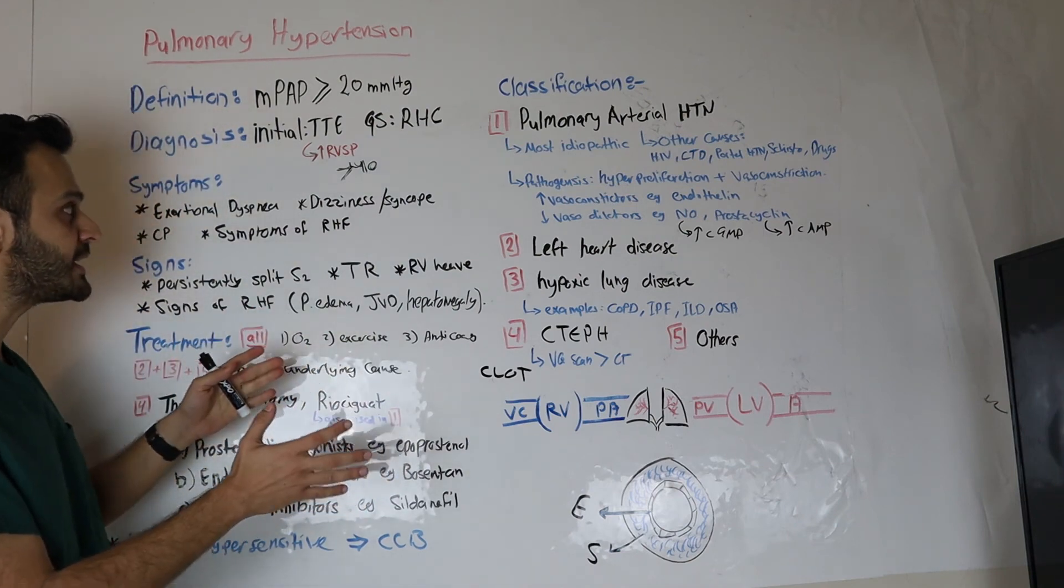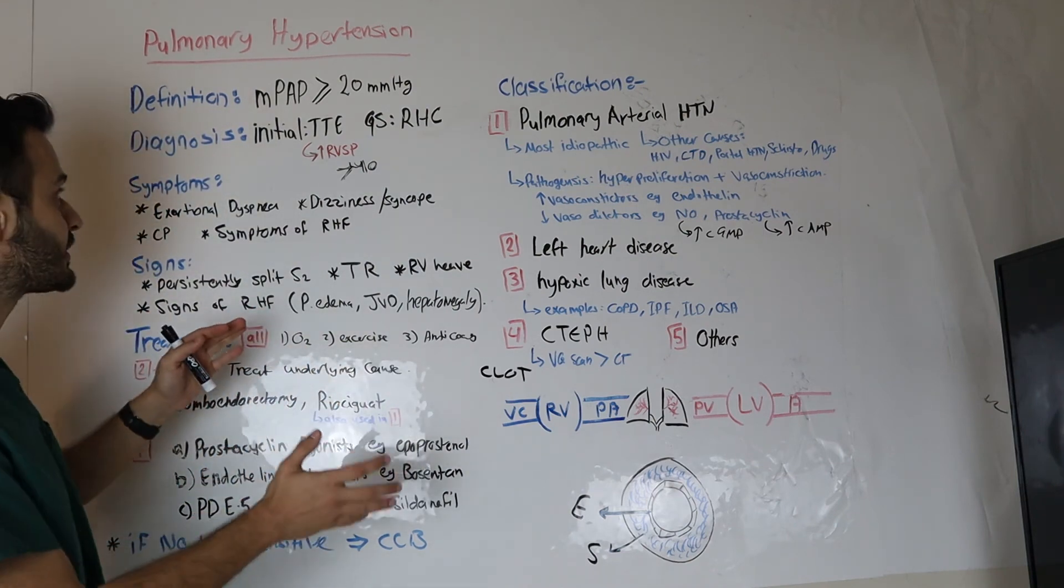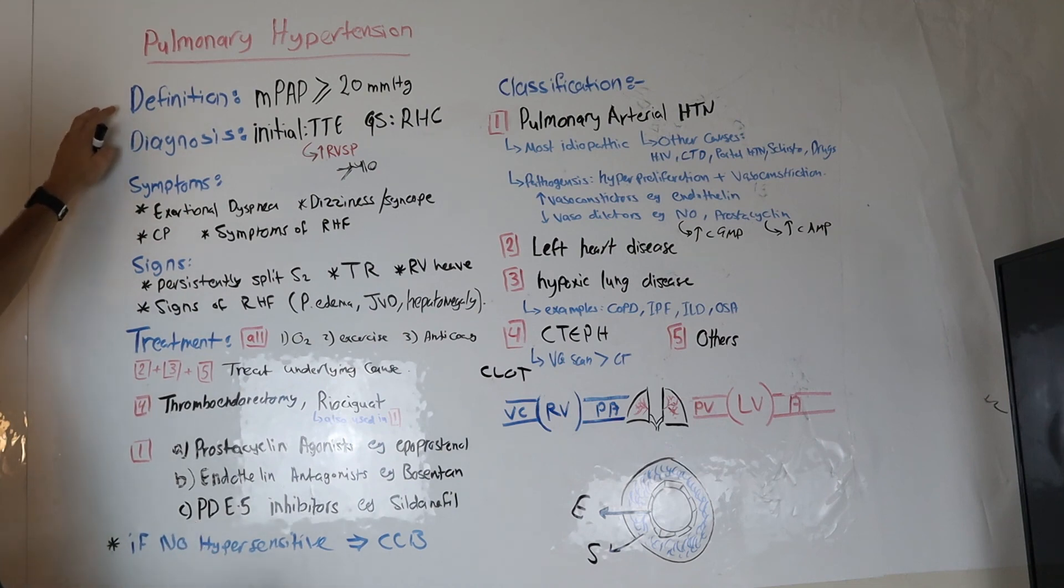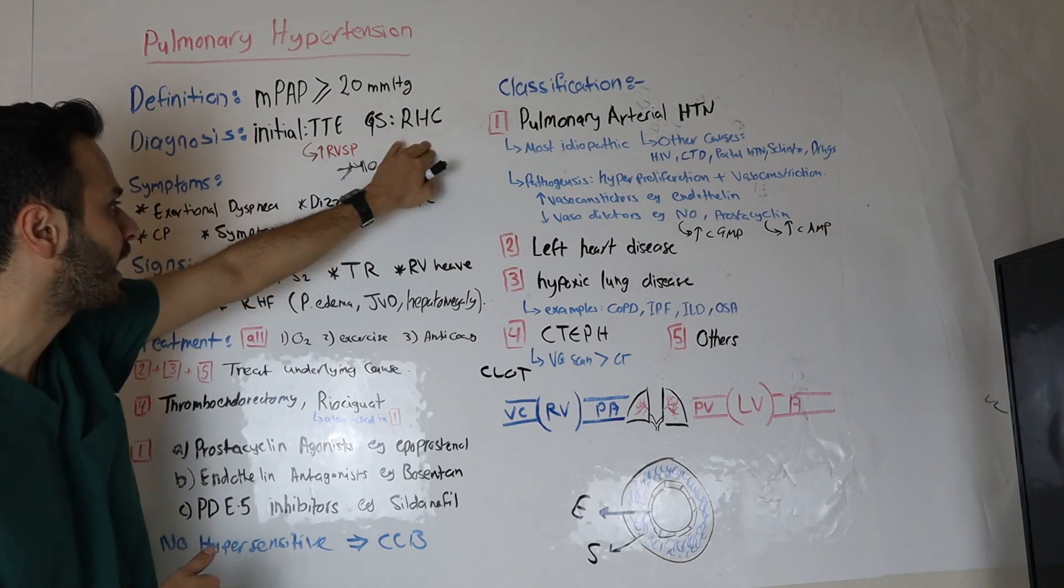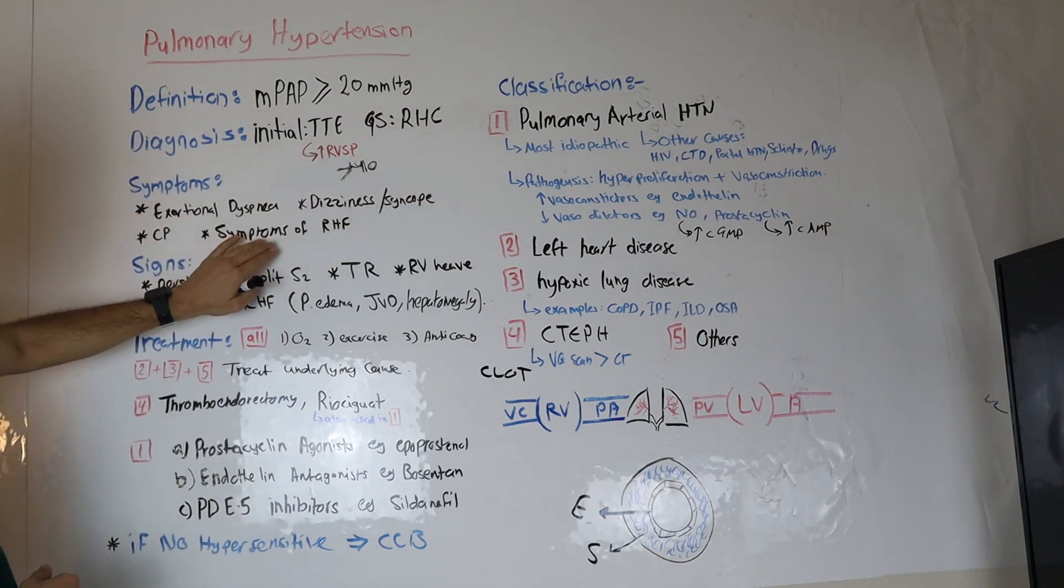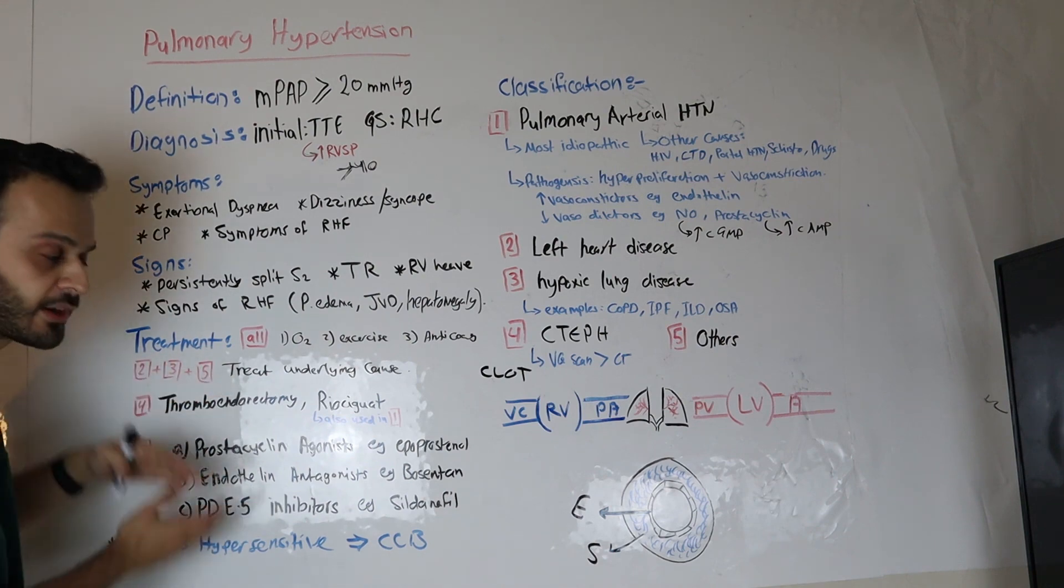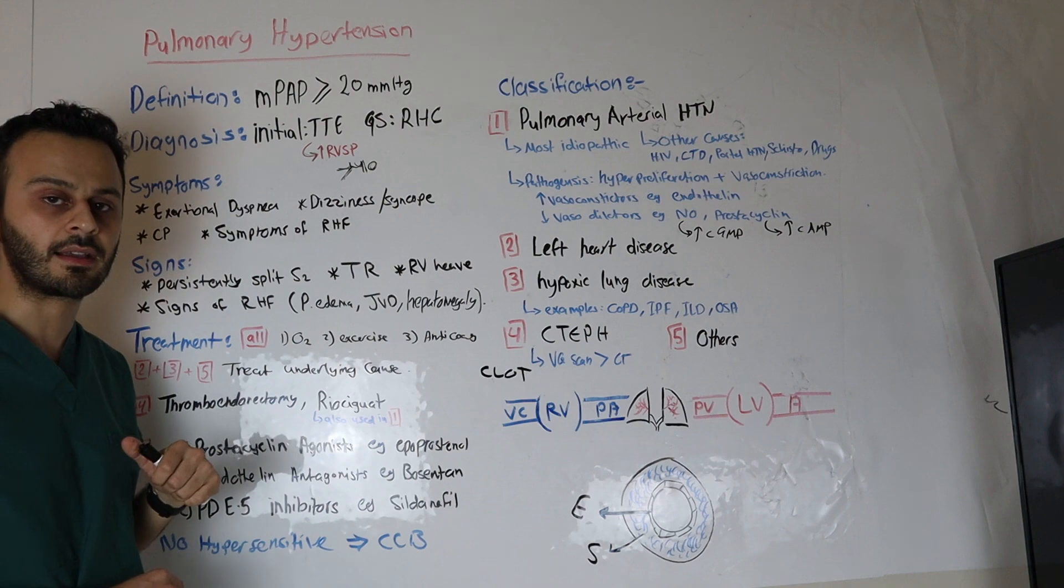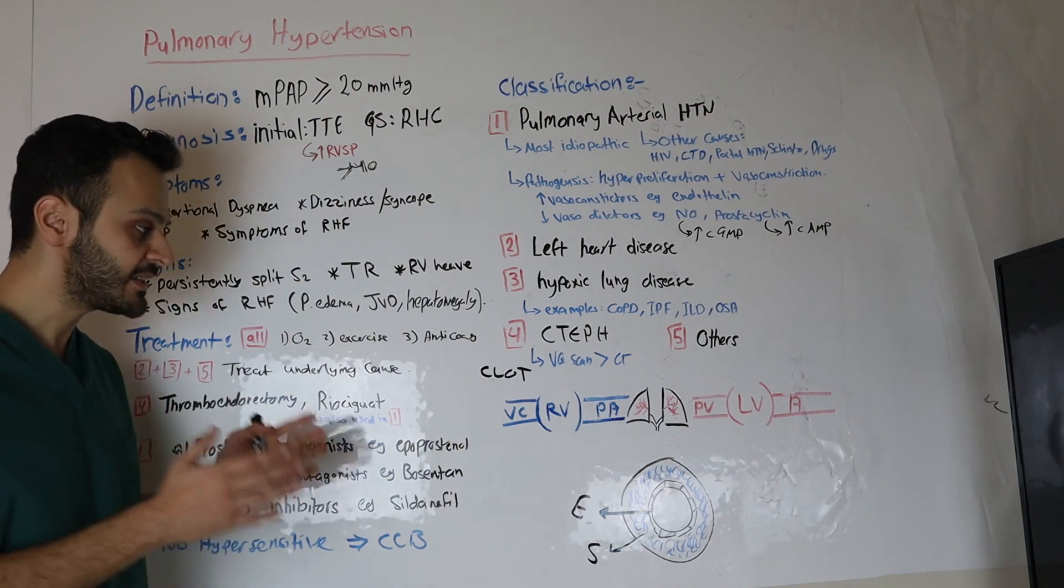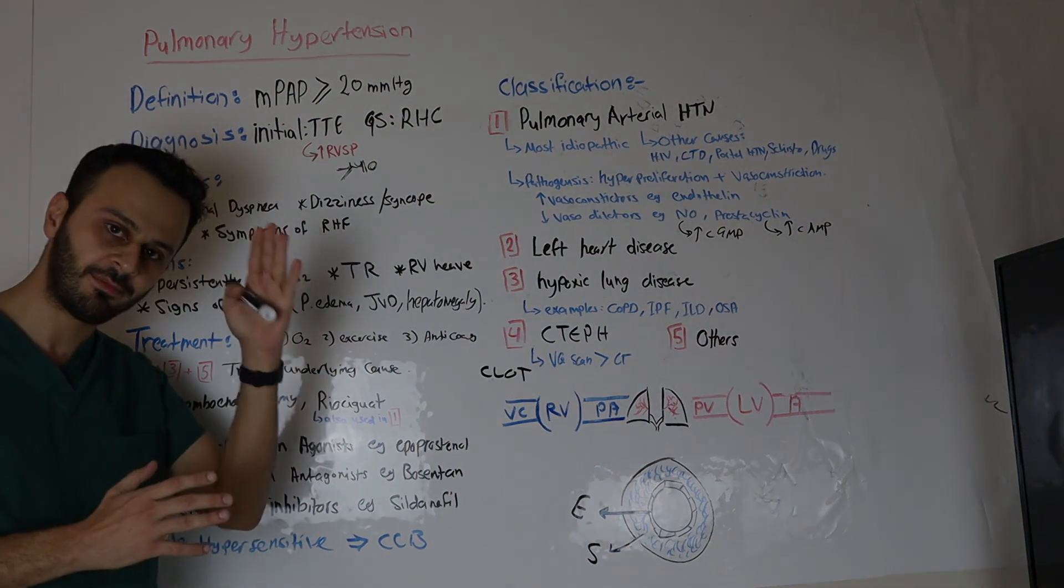So that is it for today's video. Just remember for your boards, the definition of pulmonary hypertension. Remember that the first imaging is to do a transthoracic echo, but the gold standard is a right heart cath. Remember how to identify the signs and the symptoms. And remember mainly the treatment for class one, because they like to ask about the class one management as well. That is it. Hope everyone have a great day. Take care.